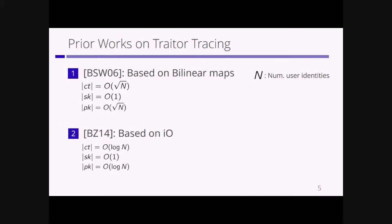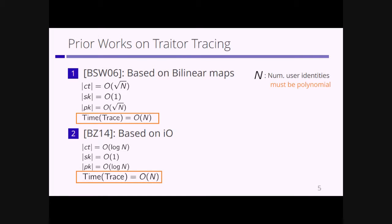There are many traitor tracing schemes so far. For example, Boneh-Naor proposed an efficient traitor tracing scheme based on bilinear maps, where capital N is the number of user identities, achieving ciphertext size O(√N). Boneh-Chari also proposed a traitor tracing scheme based on indistinguishability obfuscation with ciphertext size O(log N). However, in both of these schemes, the running time of the trace algorithm is O(N), so the number of user identities must be polynomial.